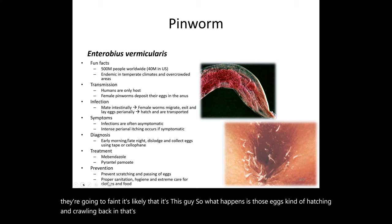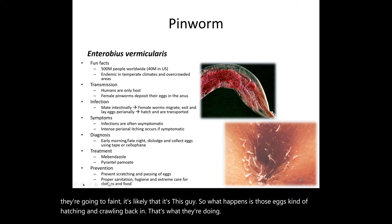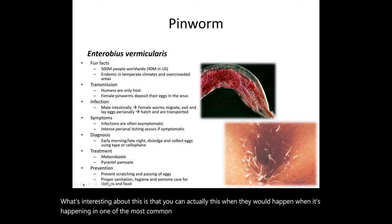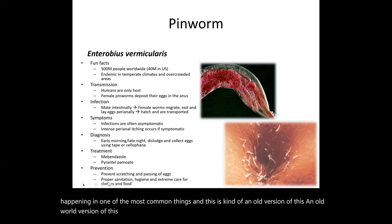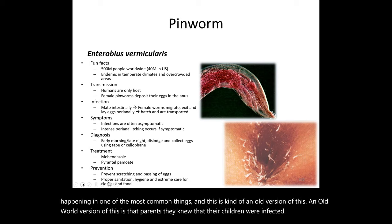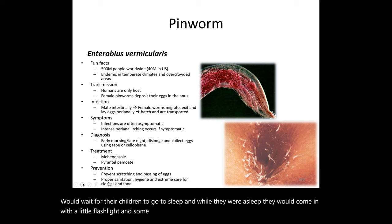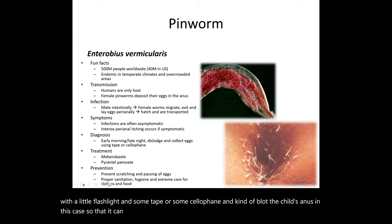One of the more common signs, especially in children, is intense scratching of the buttocks. The eggs hatching and crawling back in are what causes the itching. Interestingly, you can actually observe this happening. An old-world approach was for parents to wait for their children to fall asleep, come in with a flashlight and some tape or cellophane, and blot the child's anus to remove the worms trying to crawl back in.